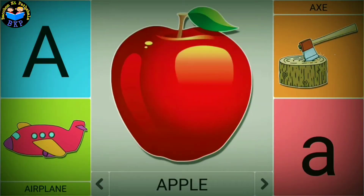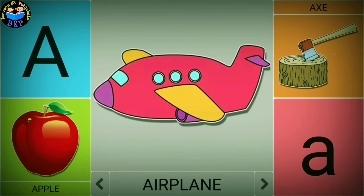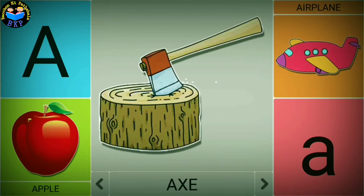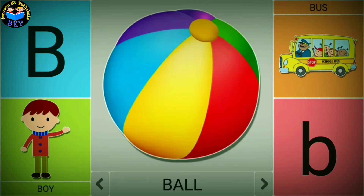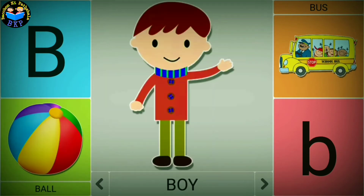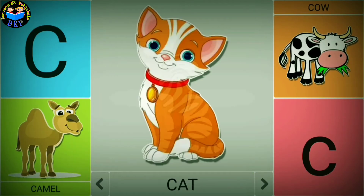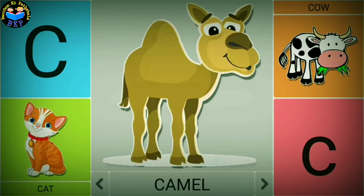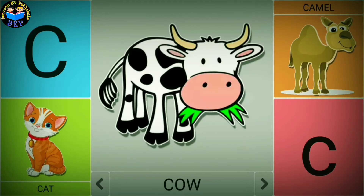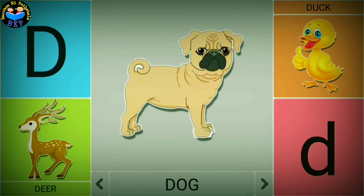A is for apple. A is for airplane. A is for axe. B is for ball. B is for boy. B is for bus. C is for cat. C is for camel. C is for cow. D is for dog.